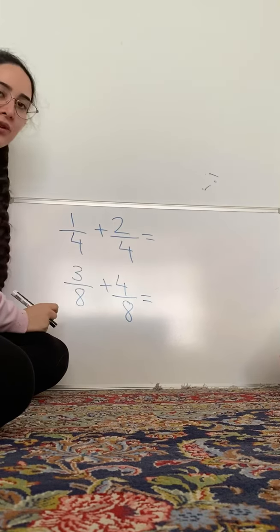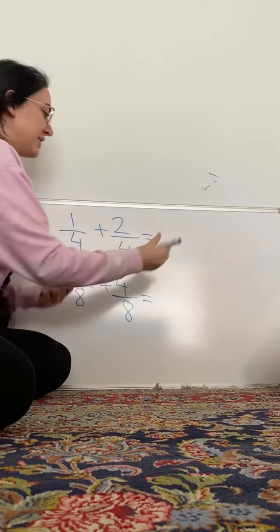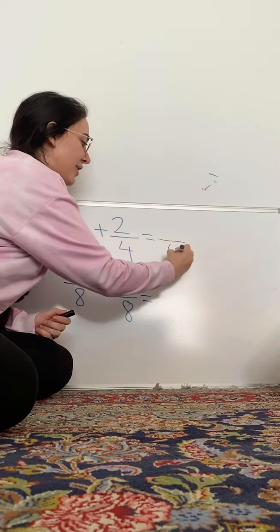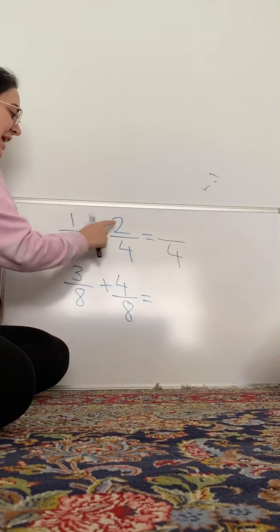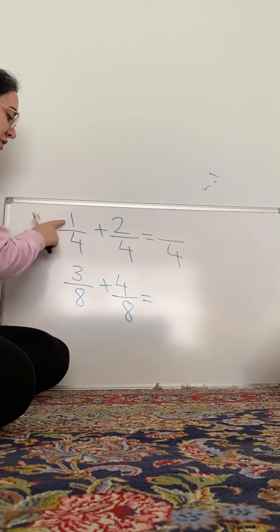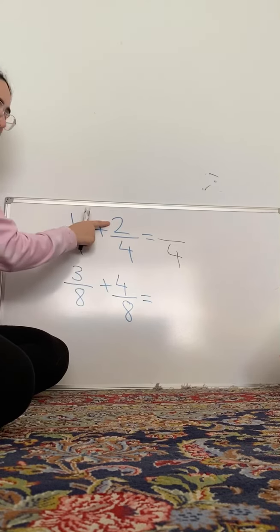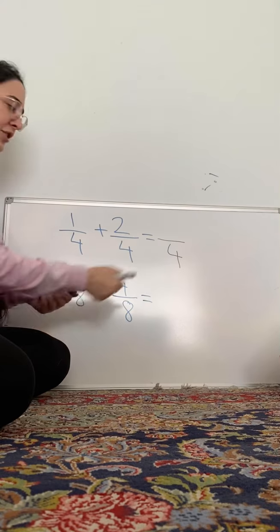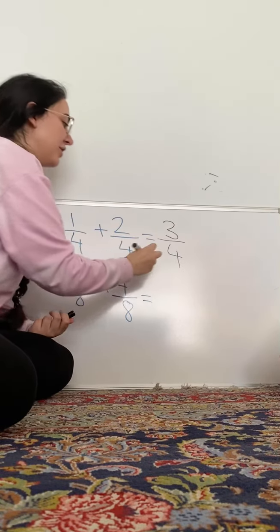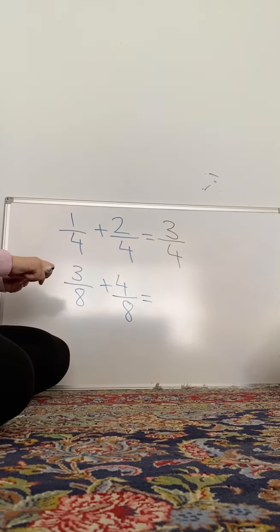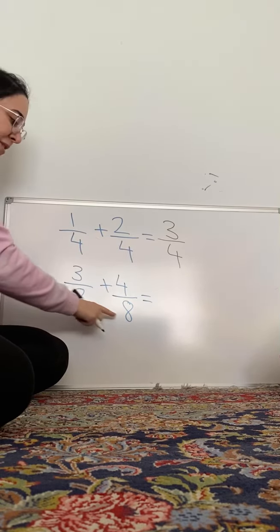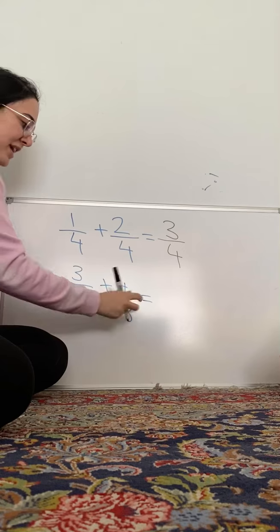So, adding fractions is very simple. We never change the denominator in Year 3. So, our denominator will stay the same. So, that will be 4. The top numbers, which were the numerators, so we add the numerators together. 1 plus 2 is, good, it is 3. So, our answer is 3 fourths.